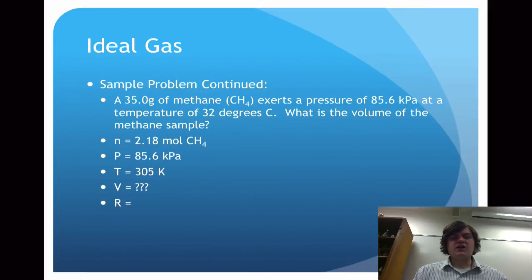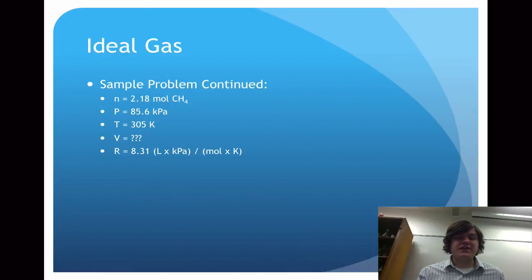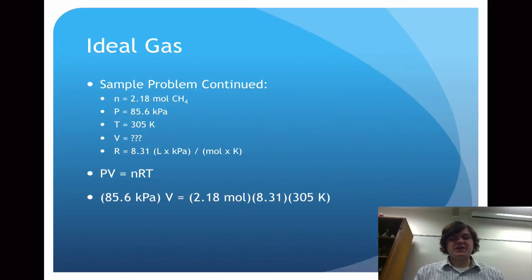So we now need R. And if you look back to your notes a couple of slides ago, the R value for a system where pressure is being measured in kilopascals is 8.31 liters times kPa over moles times Kelvin. So now we have our five pieces of information, and those five pieces of information can be plugged into PV equals nRT.